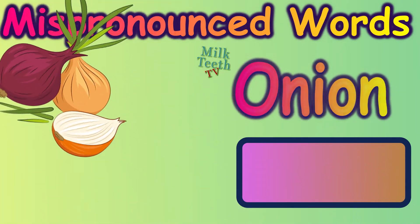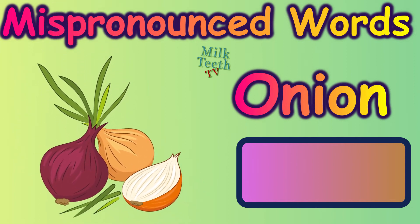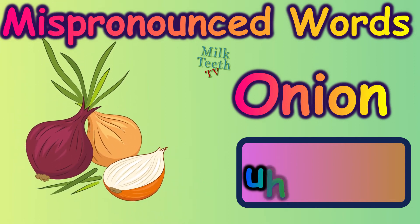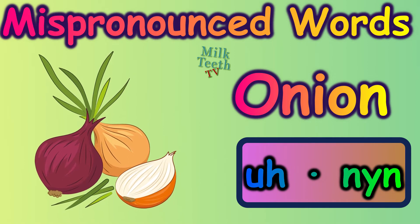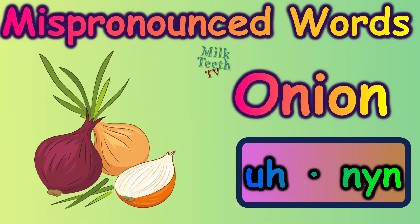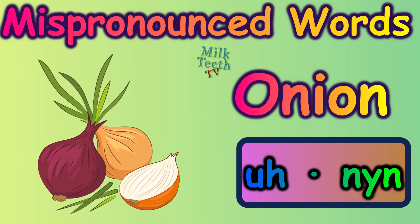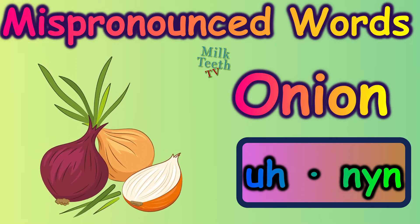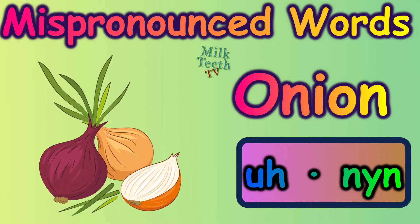Now this vegetable — most of us call it onion. But strangely, the sound of O comes out as A in this word. So we simply call it onion. Say it once more: onion.